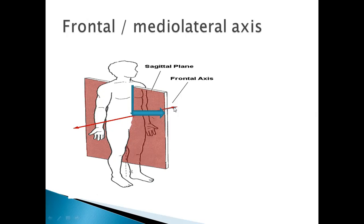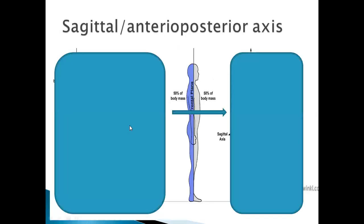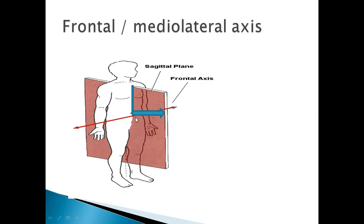What did we learn about axis? The axis is at a right angle to the plane. So this is the intersection of the plane, and the imaginary line goes medial to lateral. This is your plane, and you can see it will be a 90-degree angle. A line goes through medial to lateral through the body, forming a 90-degree angle with the sagittal plane. So this is the frontal axis which will rotate around the body.